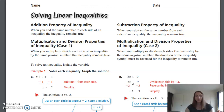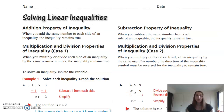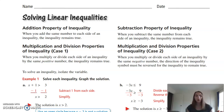The addition property of inequality states that when you add the same number to each side of an inequality, it remains true — it balances out. Similarly, the subtraction property says when you subtract the same number from each side, the inequality remains true. We can also multiply and divide: when you multiply or divide each side by the same positive number, the inequality remains true.